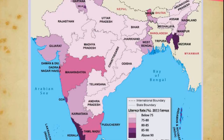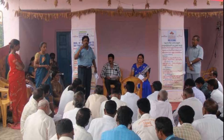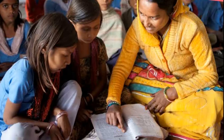Literacy means the ability to read, write, and understand a simple message; otherwise a person is considered illiterate. Low-income countries have more illiterates than middle-income and high-income countries. Compared to females, a greater proportion of males are literate regardless of income status, as females face discrimination in getting education. The adult literacy rate in India was about 60% in 2001.